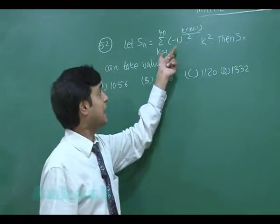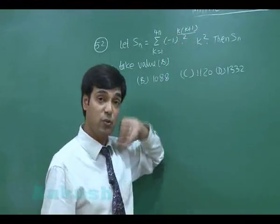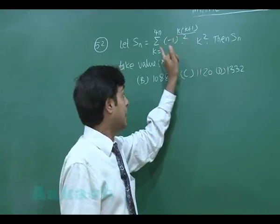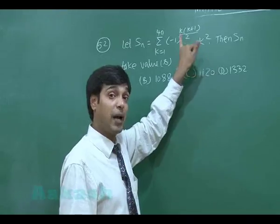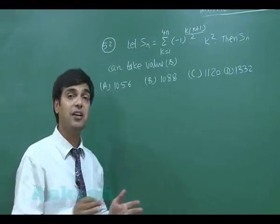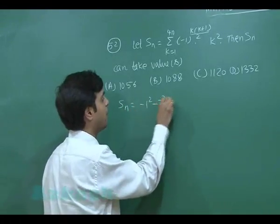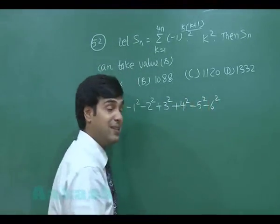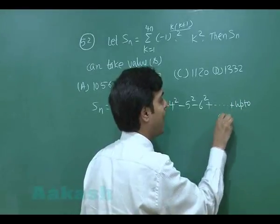When k = 1: (−1)^(1×2/2) = (−1)¹ = −1, giving −1². When k = 2: (−1)^(2×3/2) = (−1)³ = −1, giving −2². When k = 3: 3×4/2 = 6, even power, giving +3². So the pattern is: −1² − 2² + 3² + 4² − 5² − 6² + 7² … up to 4n terms.